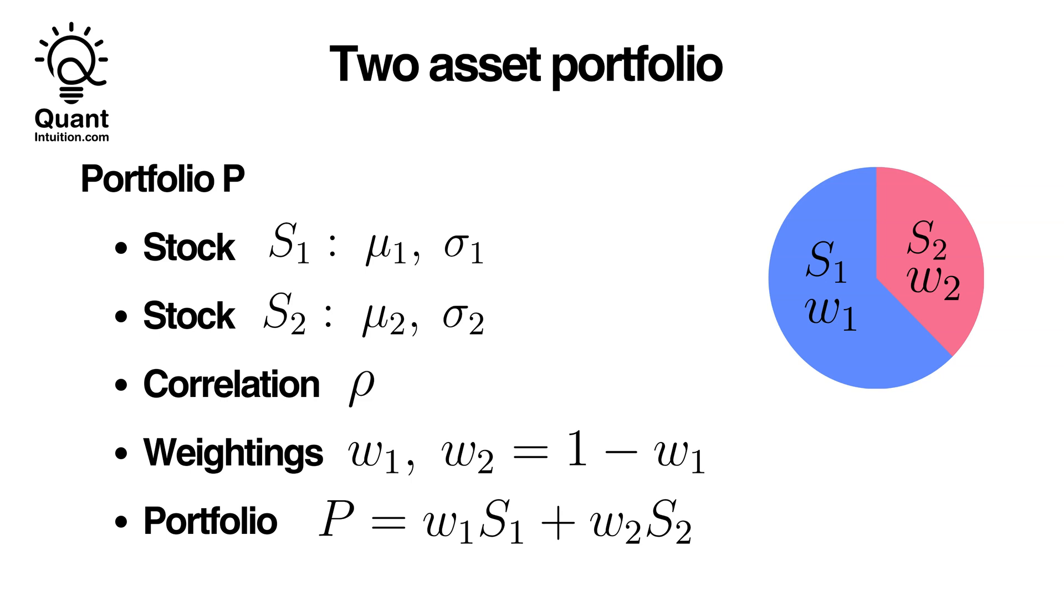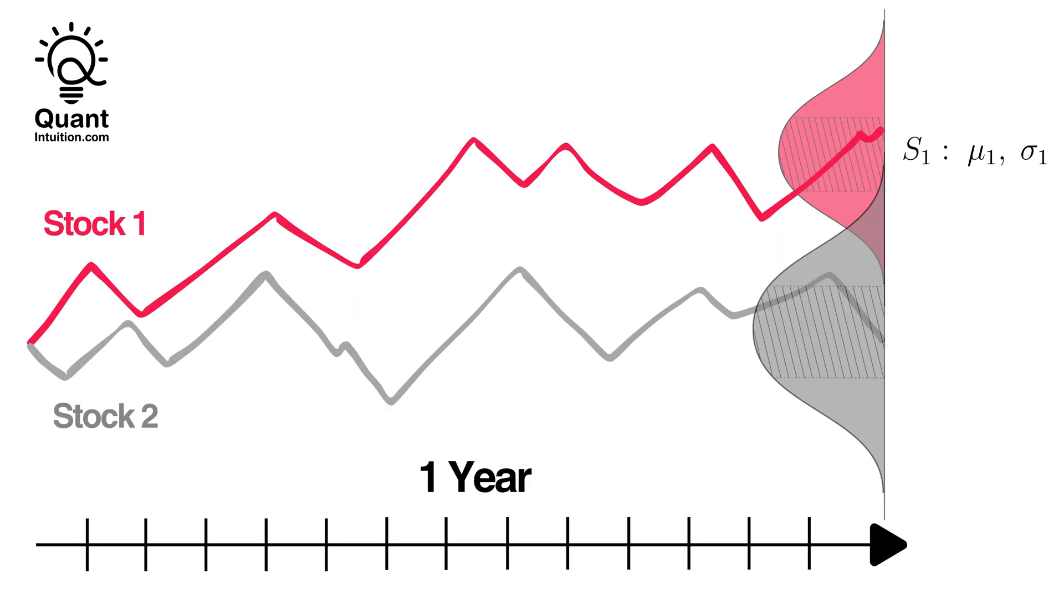To better understand this, let's again revisit our price charts from earlier. First, consider stock 1. After one year, we have an expected value of stock's one price of mu1 and a standard deviation of sigma1. The same can be said for stock 2. Depending on the stocks chosen, mu1 and mu2 can be equivalent or distinct. The same goes for sigma1 and sigma2.